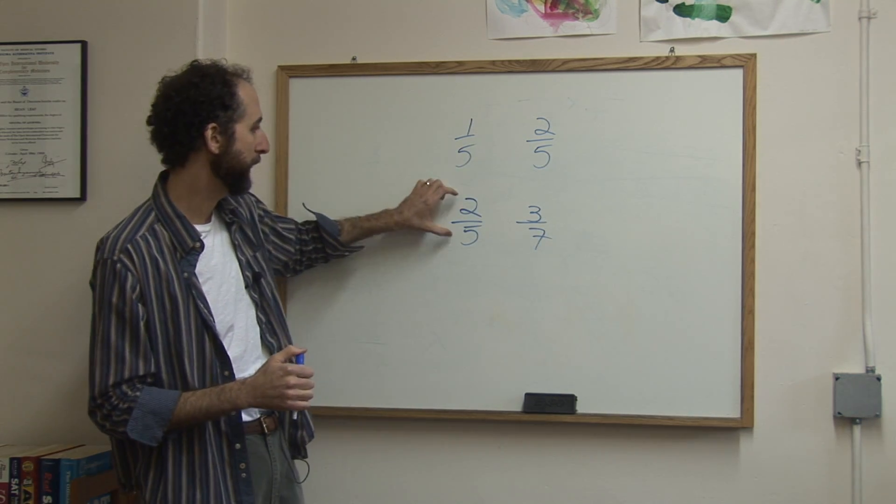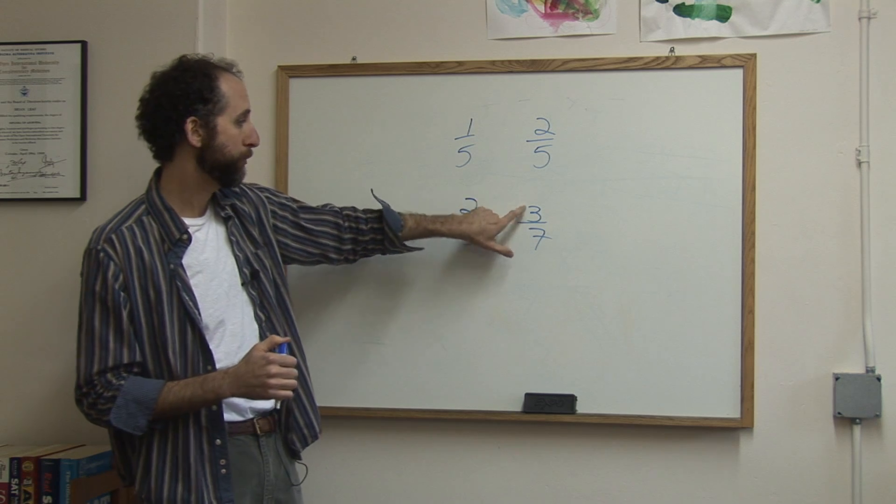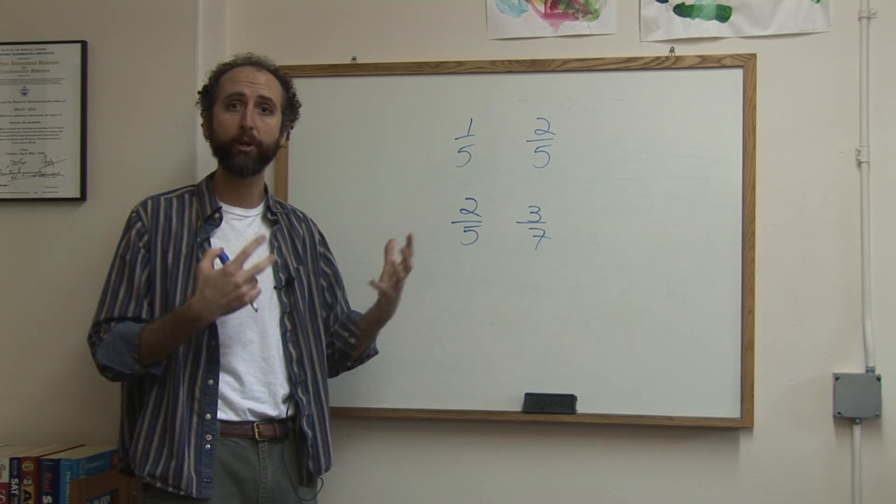In fact, they're both slightly less than half. Two is a little less than half of five, three is a little less than half of seven. So it would be a little bit hard to know which is bigger.